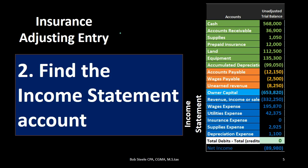Step two: find the income statement account. Every adjusting journal entry is going to have one balance sheet account and one income statement account — this is a rule of the adjusting process, not normal journal entries. The income statement accounts are the ones below the owner's capital on the trial balance. Again, it'll be painfully obvious — in this case it's insurance expense. If the problem said something like utility, wages expense, supplies, or depreciation, all are plainly obvious from the account name.